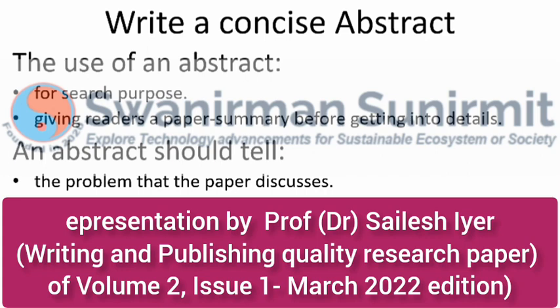The abstract should give readers a paper summary before getting into details. In one or two sentences it should tell the problem being discussed, the work done so far, and the method being used. Don't use the exact wording from another paper — that leads to plagiarism. Citations are not preferred or allowed in an abstract. It should present original findings or achievements. The abstract should not have reference numbers or multiple paragraphs.